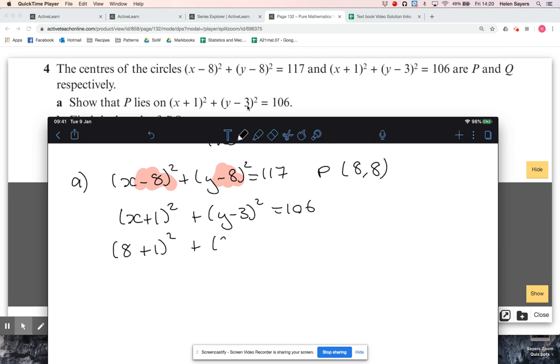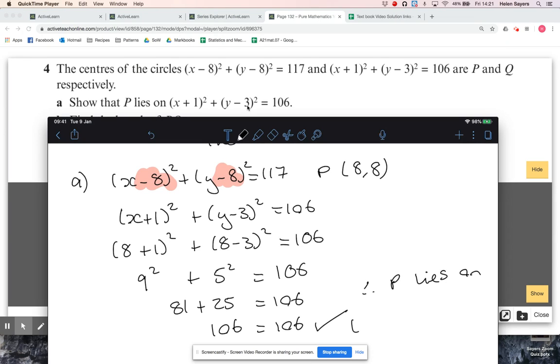So x is 8 and y is 8, and just check that that does give me 106. So that's going to be 9² + 5². I'll show every single state of working just on the safe side. So that does work, therefore we have shown that P lies on this circle.